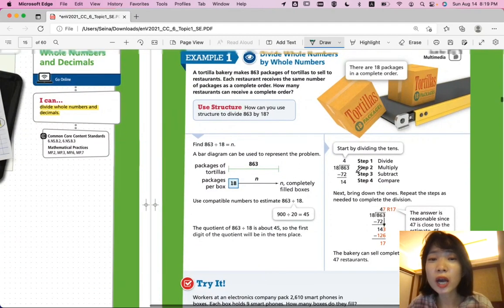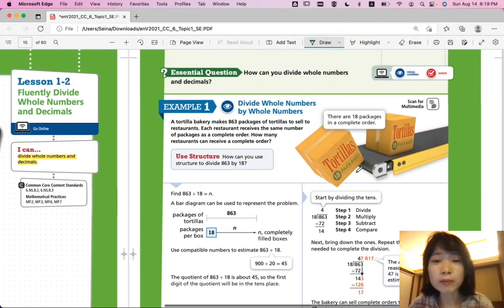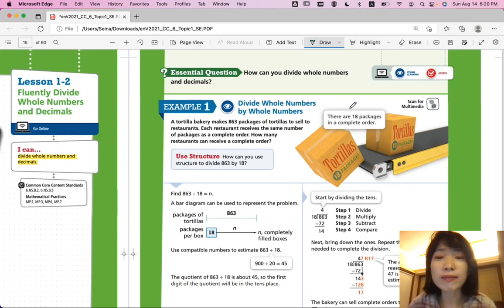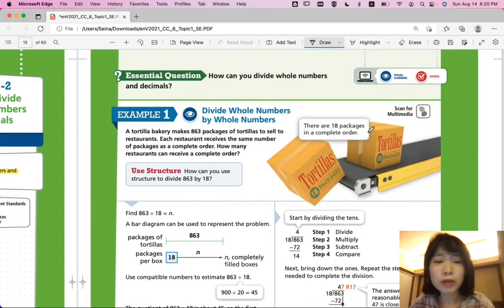Example 1. We're going to divide whole numbers by whole numbers. So, throughout this lesson, think about how we can divide whole numbers and decimals. A tortilla bakery makes 863 packages of tortillas to sell to restaurants. Each restaurant receives the same number of packages as a complete order. How many restaurants can receive a complete order?